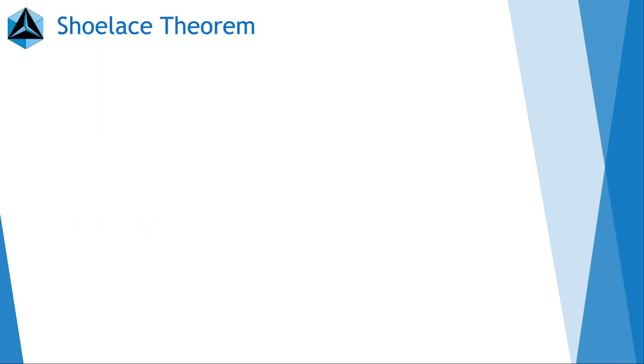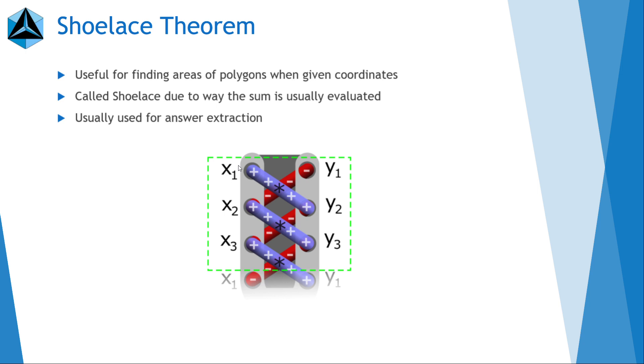Okay, so now some theorems. So the first one is shoelace theorem. The shoelace theorem is a formula for calculating the area of polygons when you're given the coordinates of the polygon. And it's pretty simple. So what you do is you just write the coordinates onto your paper like this, and then you draw a shoelace. So that's why it's called shoelace like this. You just draw the shoelace on your paper.